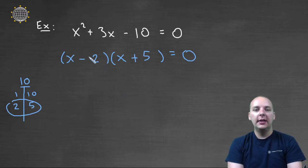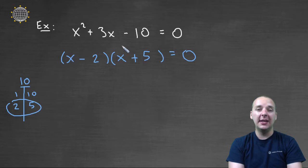And lucky for us, negative two times five does in fact give us negative ten. So this is how the quadratic factors, so these are the same equation, just written in a different way.